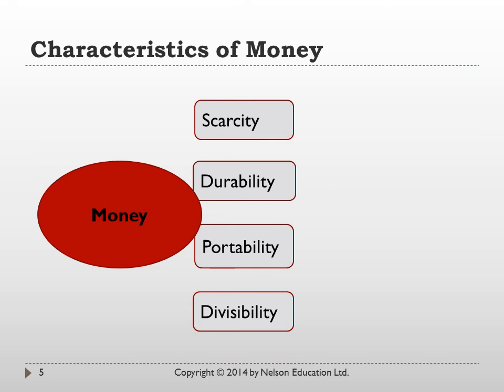Another characteristic of money is that it must be divisible — it must be divided into smaller parts. Money is a measure of the exchange of value, and sometimes you have smaller purchases, so you would need something that can be divided into smaller quantities to pay for smaller purchases. Those are the primary characteristics of money.